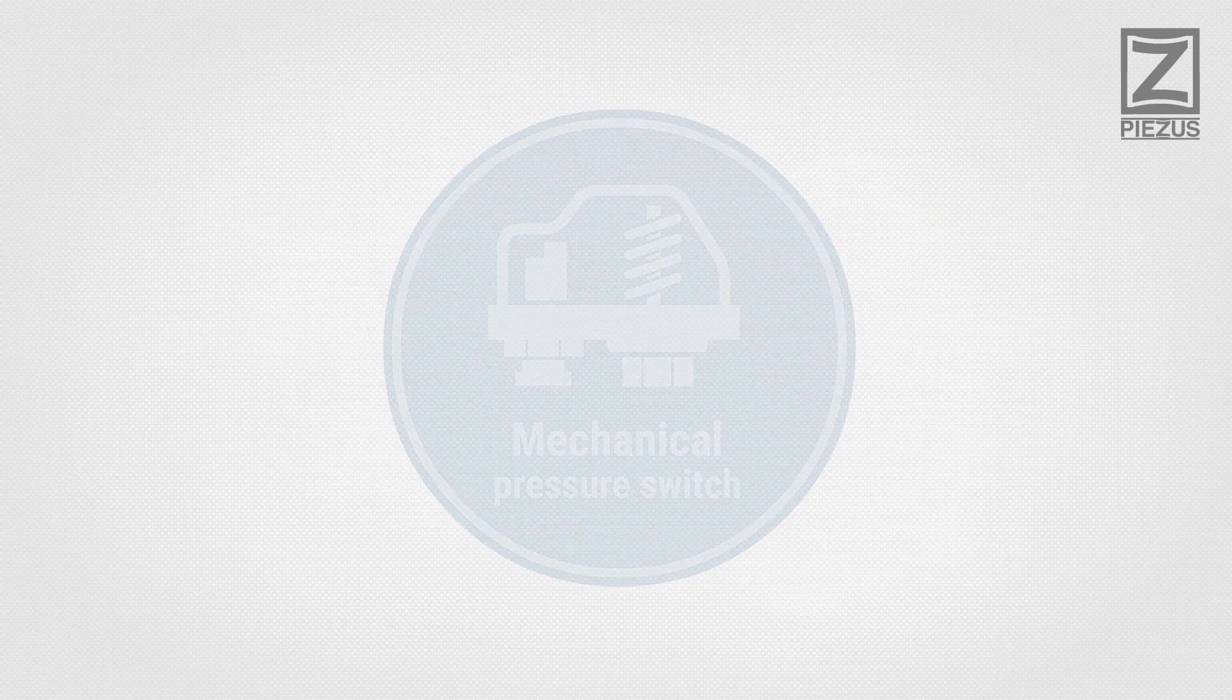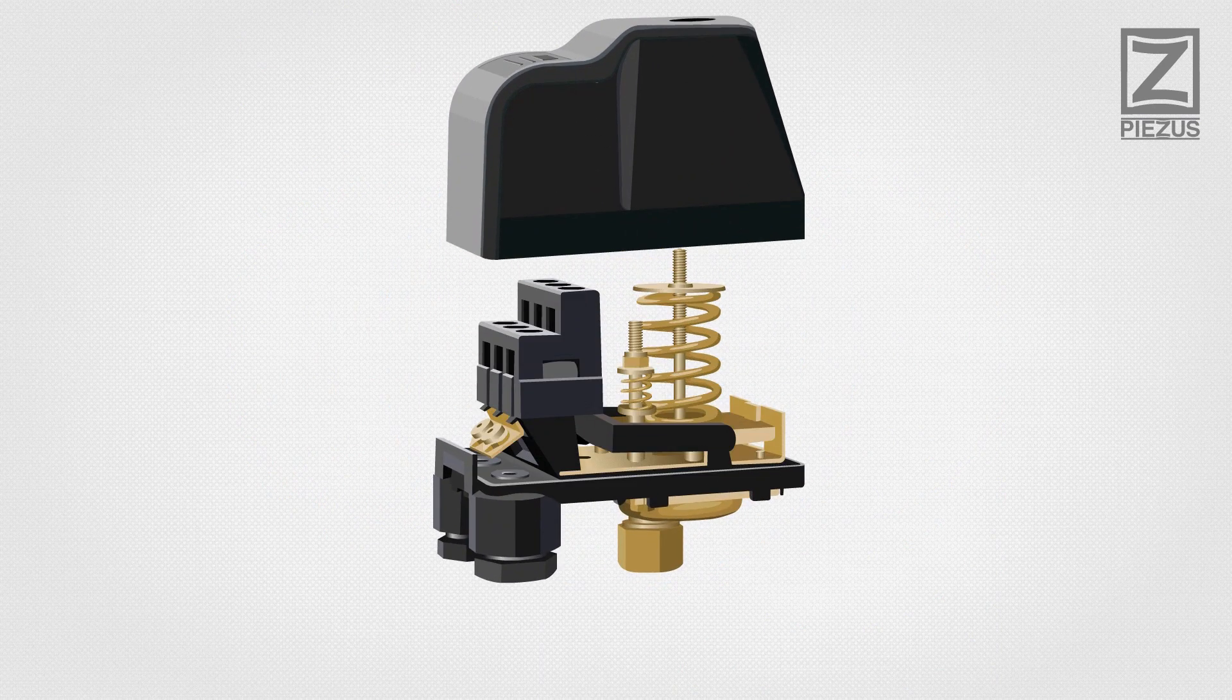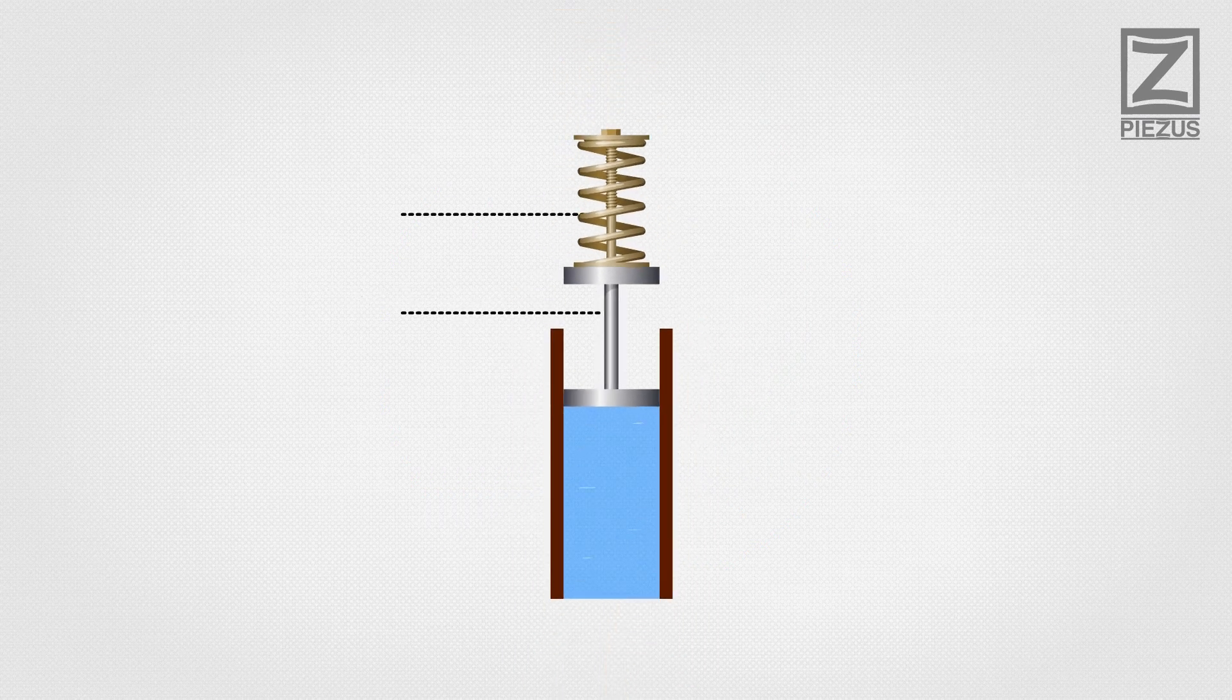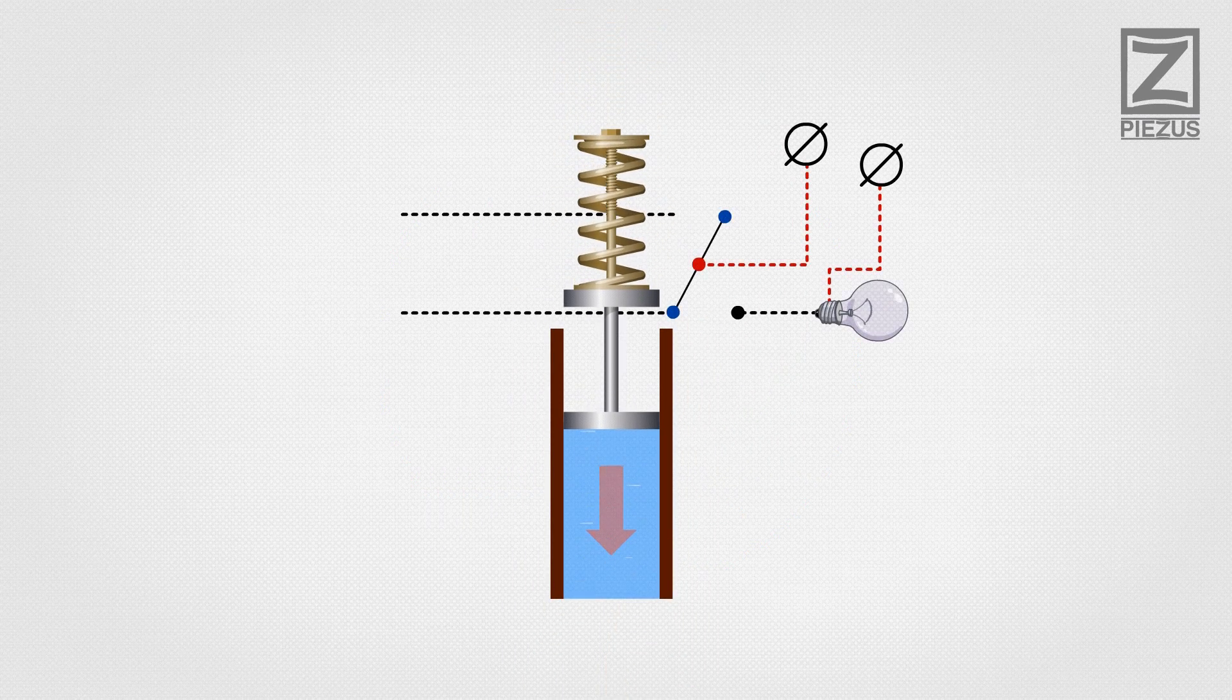Mechanical Pressure Switch. In a mechanical pressure switch, a diaphragm closes and opens the circuit when the medium pressure rises or drops to a certain set value.